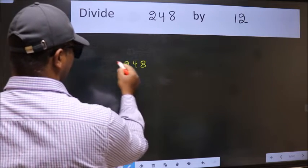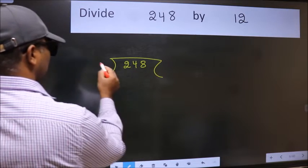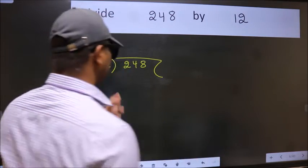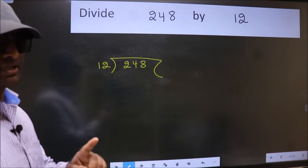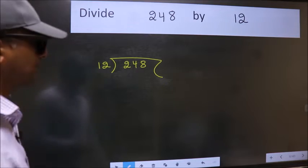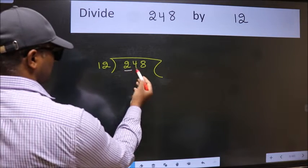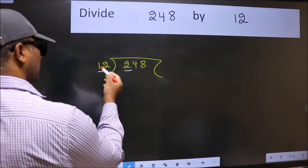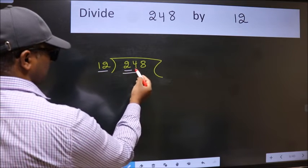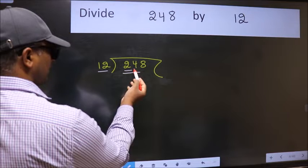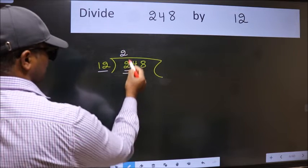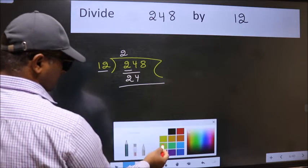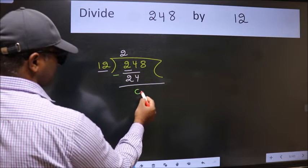248 here, 12 here. This is your step 1. Next, here we have 2 and here 12. 2 is smaller than 12, so take two numbers, 24. When do we get 24 in 12 table? 12 to 24. Now we should subtract. We get 0.